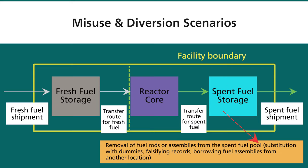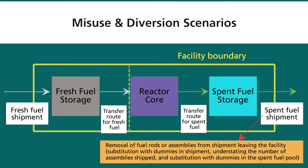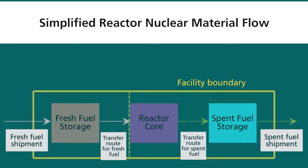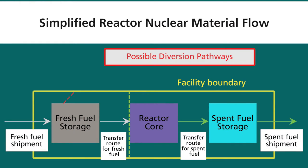Another scenario is removal of fuel rods or assemblies from the spent fuel pool, with concealment through substitution with dummies, falsifying records, or borrowing from other locations. A final scenario is removal of fuel rods or assemblies from an outgoing shipment, concealed by substituting dummies, understating the quantity in the shipment, or other falsification of records. Returning to the simplified reactor material flow diagram, possible diversion pathways exist from fresh fuel storage, transfer routes, the reactor core, and spent fuel storage.